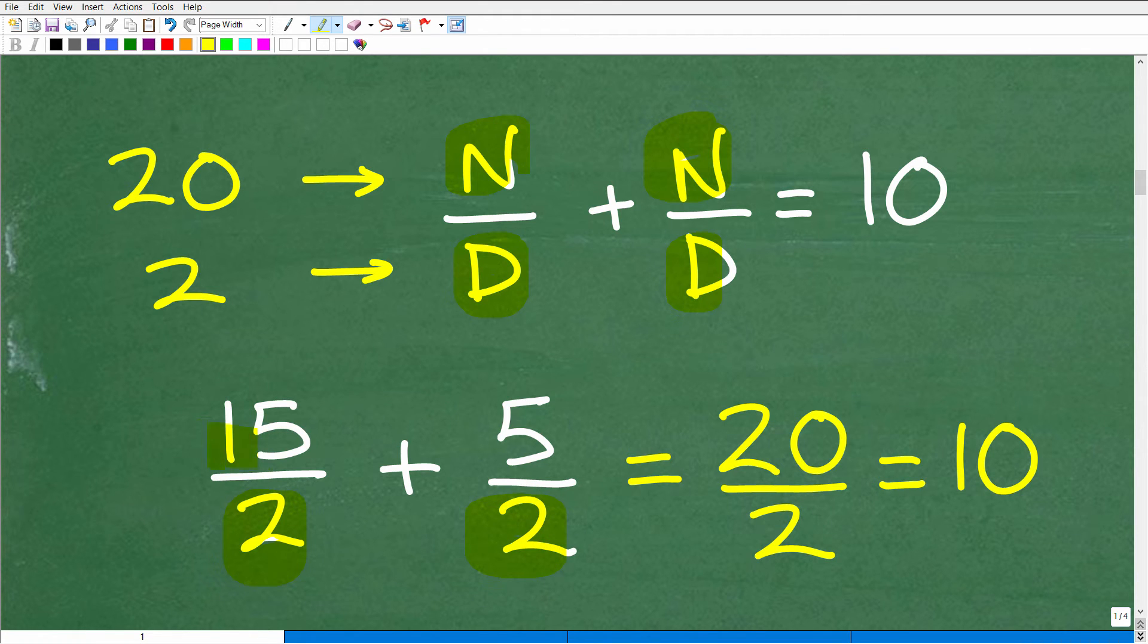And then what combination of numbers could we have such that when we add them up, we get 20 in the numerator? There's all sorts of combinations. 15 and 5 is 20. That's 20 over 2. But we could also have 19 and 1. 19 over 2 plus 1 half is what? Well, that's going to give me 20 halves. You could have 10 over 2 and 10 over 2, which, of course, this is a 5. 5 plus 5 is 10.